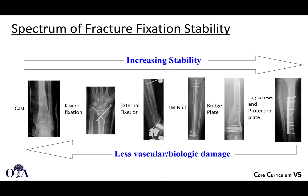There's a spectrum of fracture fixation stability — everything from a splint or a cast on the left, to using pins and external fixation, all the way to intramedullary nails and very rigid internal fixation like compression plates and screws. As we provide increased stability, it often comes at the cost of more biologic damage and more invasive approaches.